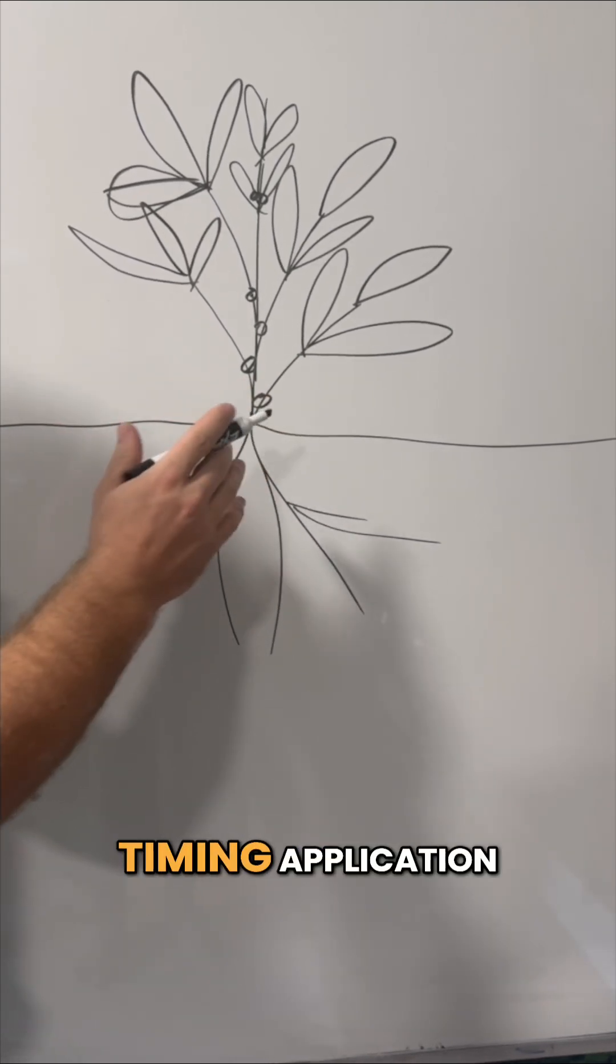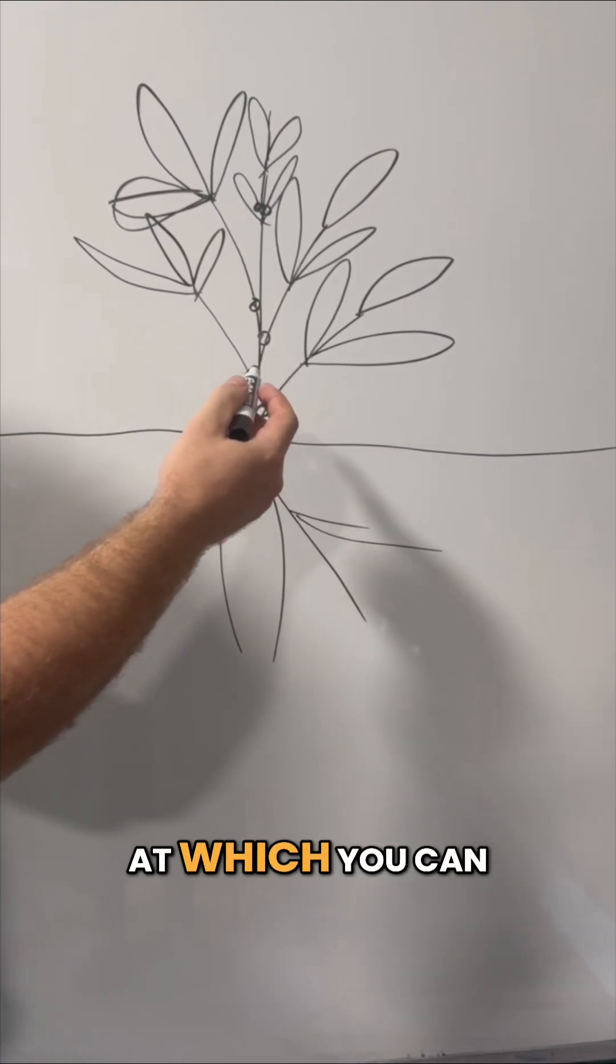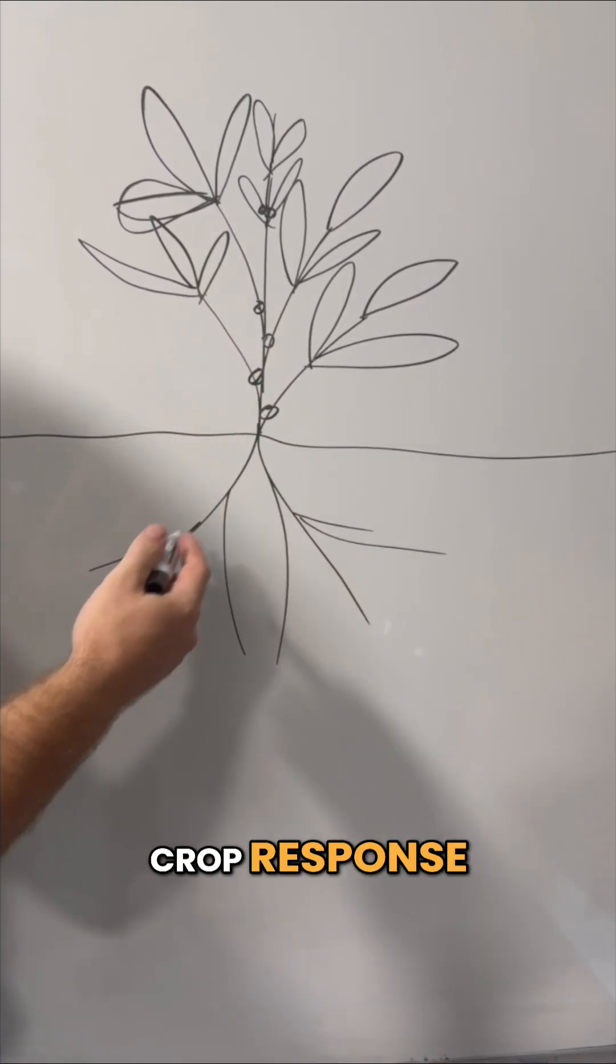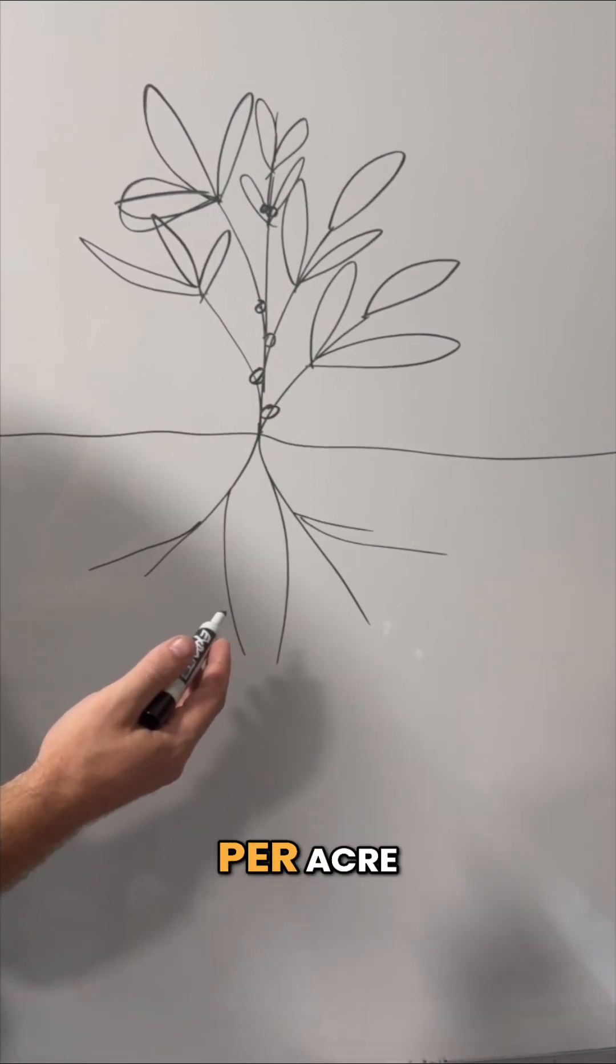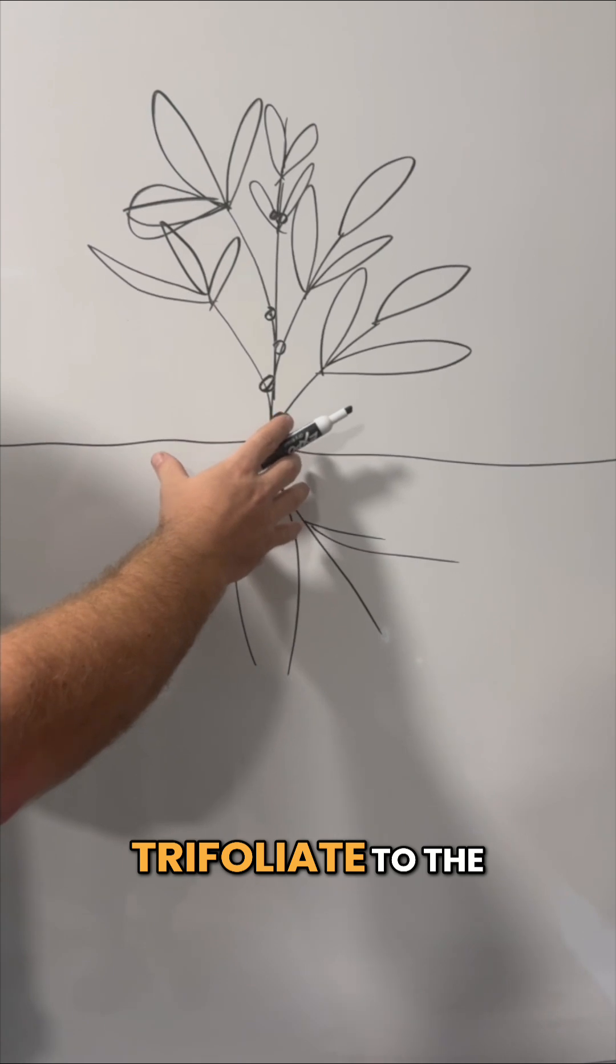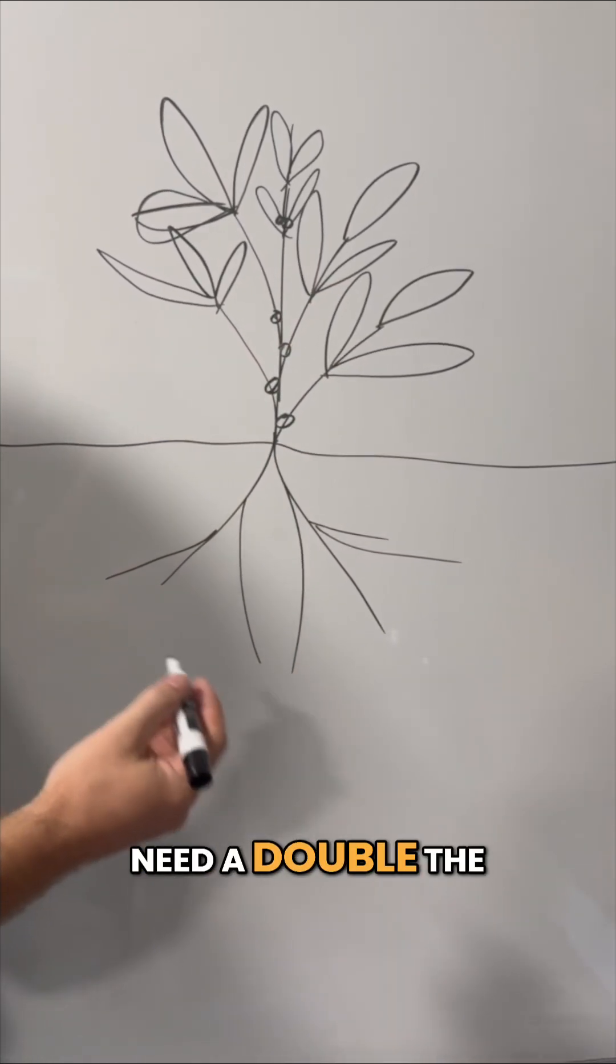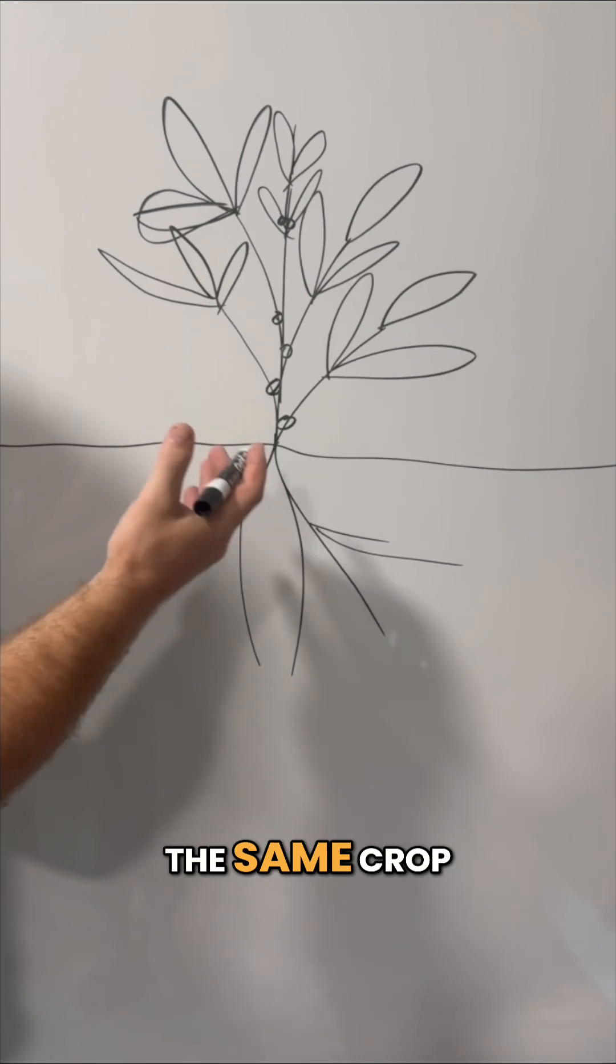The optimal timing application window is at about the third trifoliate, at which you can get a very nice crop response with as little as two to three quarts of Accelerate per acre. But if you miss that window and you go past the third trifoliate to the fourth or fifth trifoliate, you might now need double the application rate to get the same crop response.